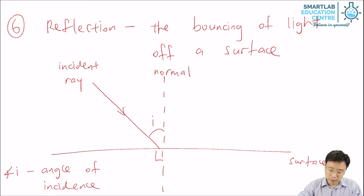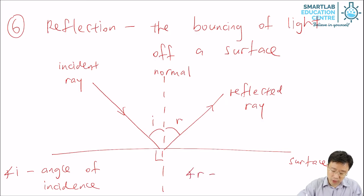The ray when it hits the surface, it will bounce off. This ray that bounces off the surface is called the reflected ray. Similarly, there is an angle between the normal and the reflected ray. We use R to label this angle. And this angle R is called the angle of reflection.